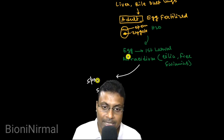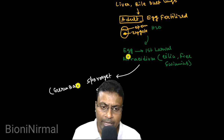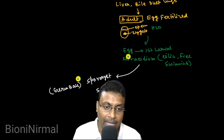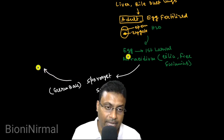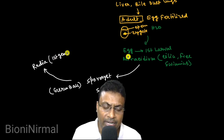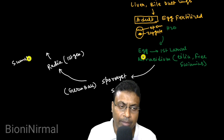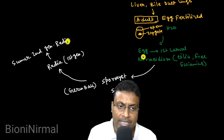This is the second larval stage, and in the second larval stage we call it redia. Redia is a different generation, so we call it redia larva — first generation redia larva. When summer conditions are different, the first generation redia larva becomes the second generation redia larva.